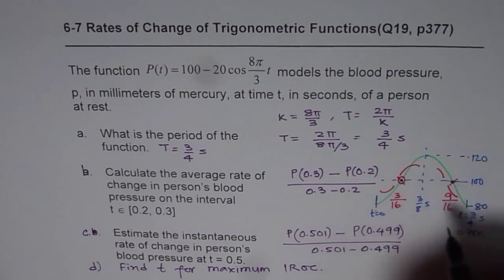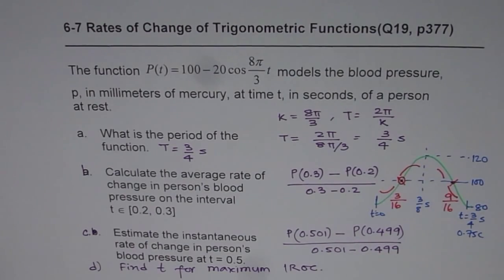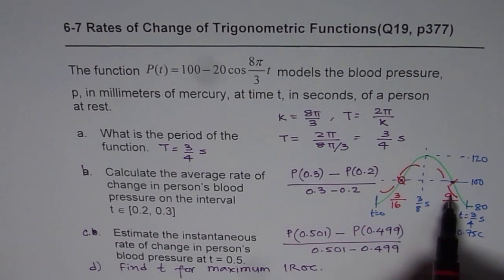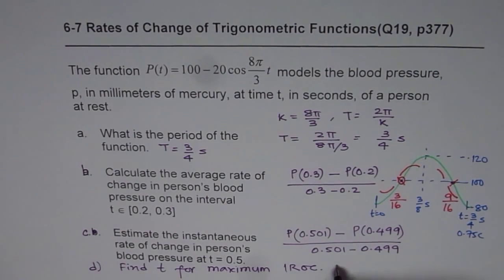So if you find instantaneous rate of change at these points, you will get high instantaneous rate of change. So 0.5 is actually close to 9/16. So also find instantaneous rate of change at 9/16. So that point T seems to be at 3/16 or at 9/16.